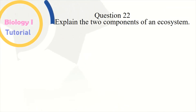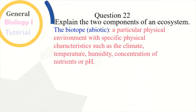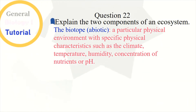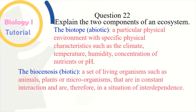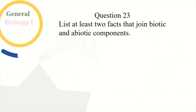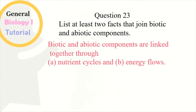Question 22: Explain the two components of an ecosystem. The biotope (abiotic) is a particular physical environment with specific physical characteristics such as climate, temperature, humidity, concentration of nutrients, or pH. The biocenosis (biotic) is a set of living organisms such as animals, plants, or microorganisms that are in constant interaction and are therefore in a situation of interdependence.